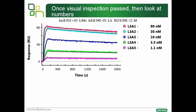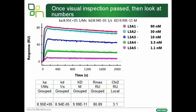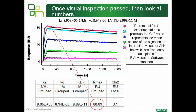Once the visual inspection is passed — i.e., the fit lines pass through the middle of the experimental data — it is then time to look at the numbers. These are our rate constants generated, along with the Rmax and the chi-squared. The first thing to do is look at the Rmax to see that it corresponds to the Rmax from the sensorgram. You can see that the response is saturating around 80 RUs, and this is indeed the reported Rmax value. In terms of chi-squared — the difference between the fitted data and the experimental data — the BIAevaluation software says that chi-squared values less than 10 are frequently acceptable.